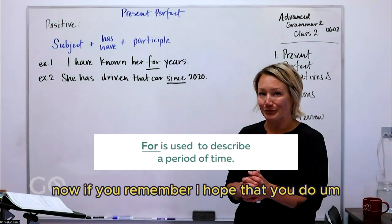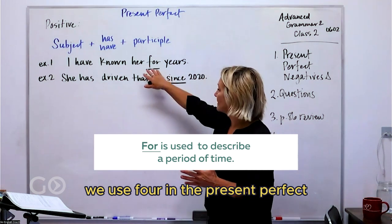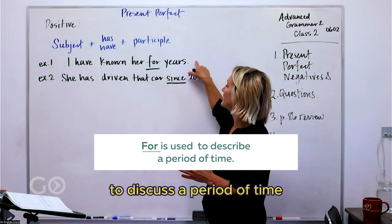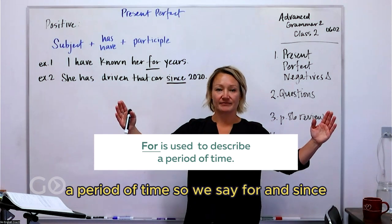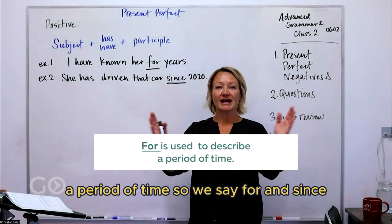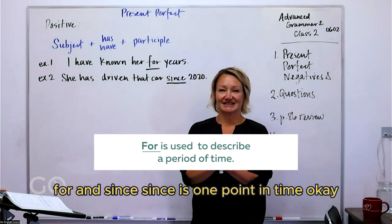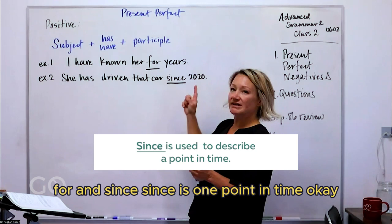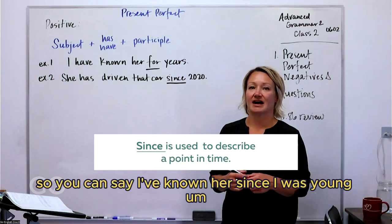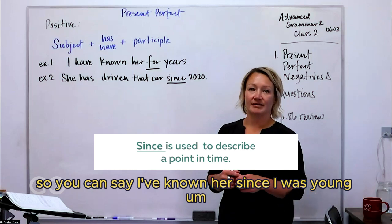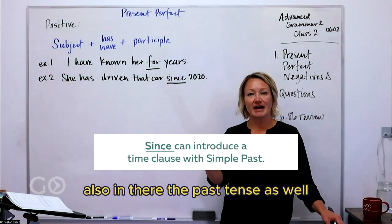Now, if you remember, we use 'for' in the present perfect to discuss a period of time. We say 'for' and 'since.' 'Since' is one point in time. So you can say 'I've known her since I was young,' and that's then using also the past tense in there as well.